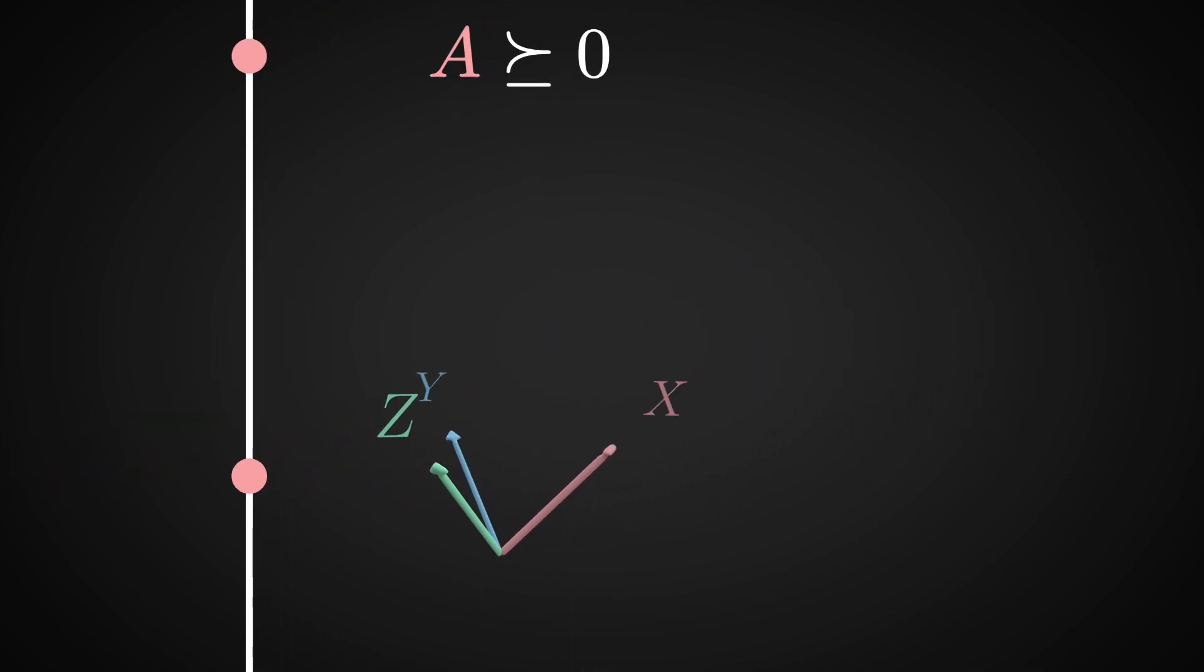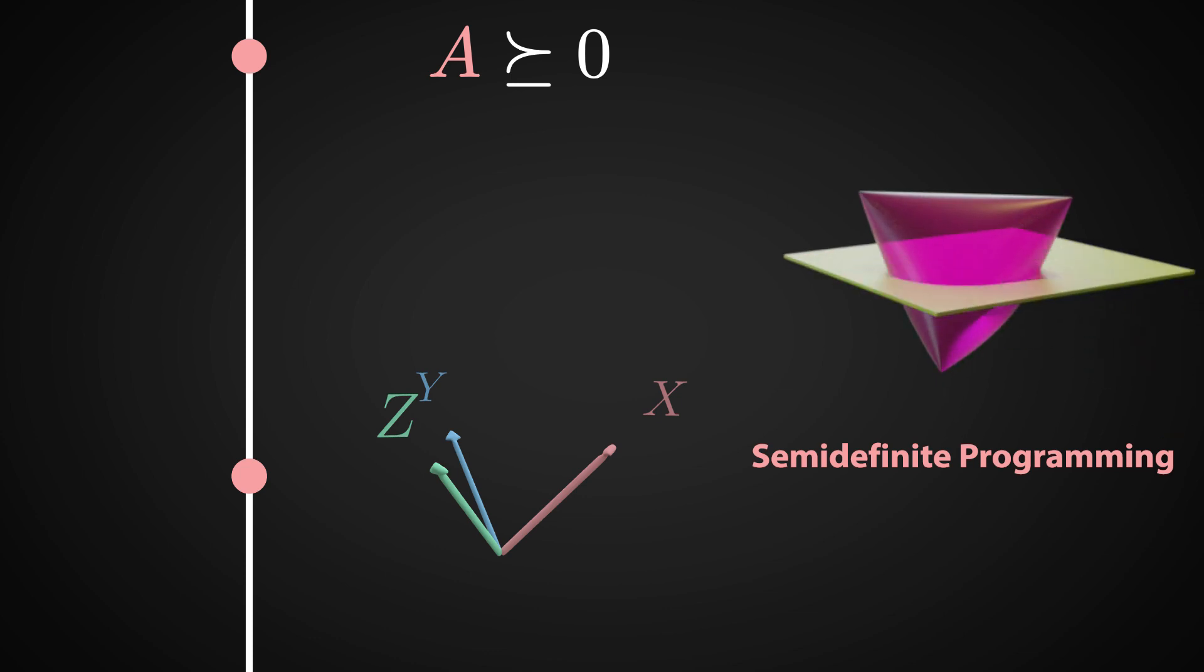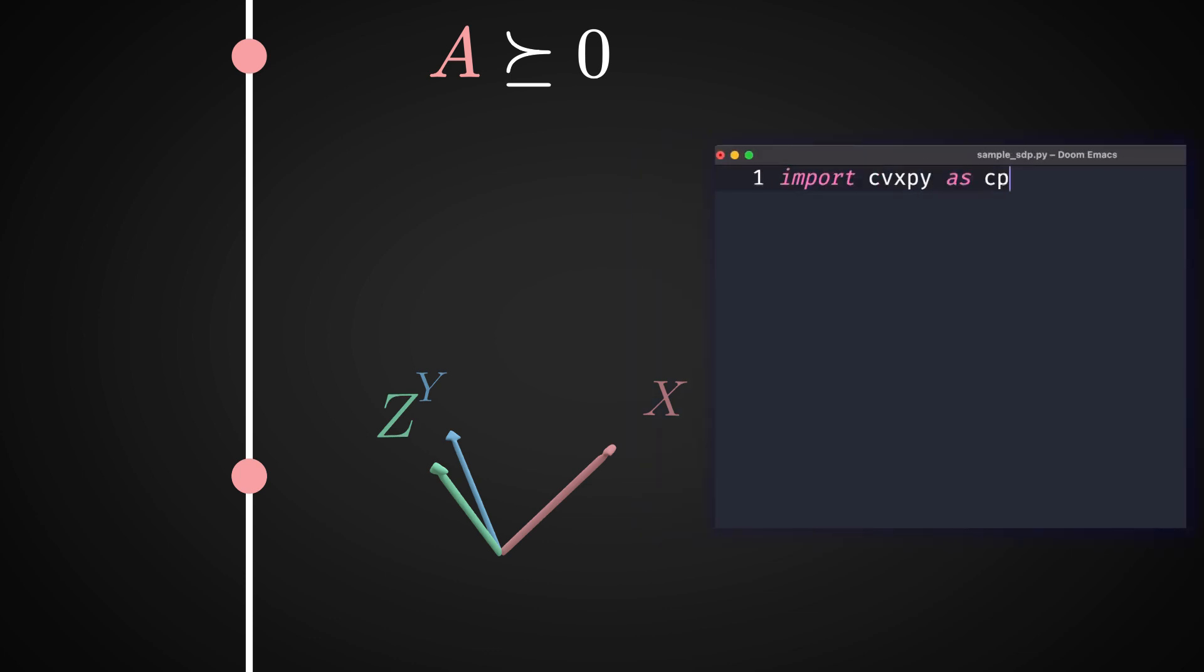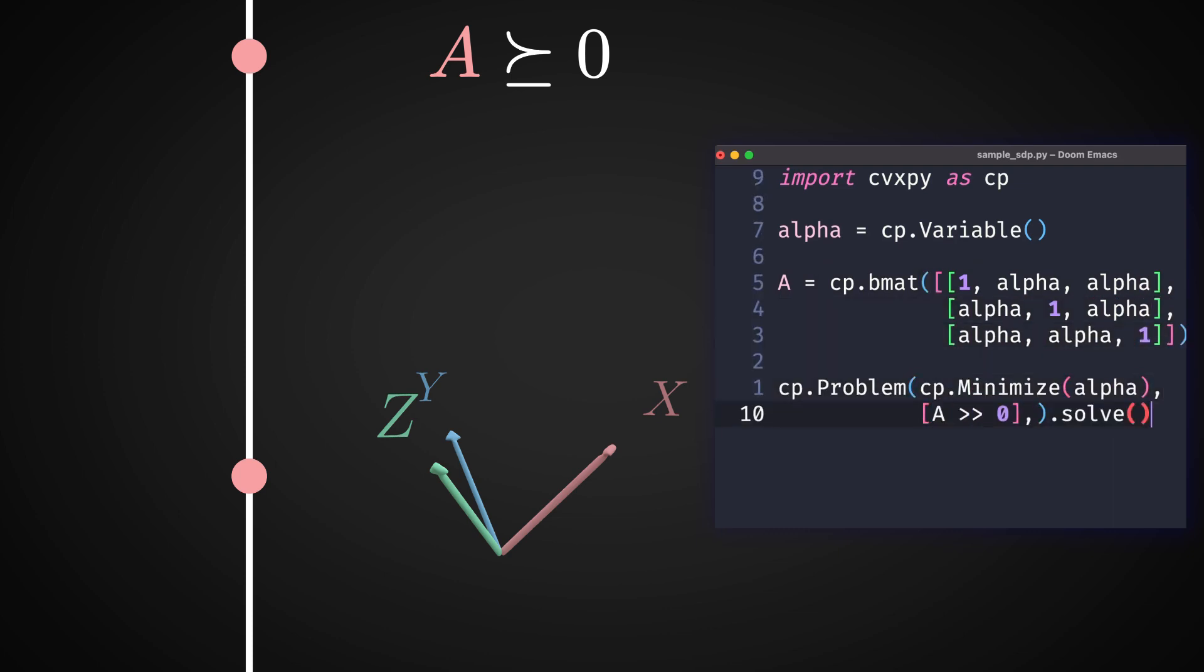Crucially, what we will discover along the way is a general technique for searching for positive semi-definite matrices called semi-definite programming. This is a technique that anyone interested in optimization should see at least once in their lifetime. And if you stay until the end of this video, I will even show you how easy it is to solve semi-definite programs with Python.